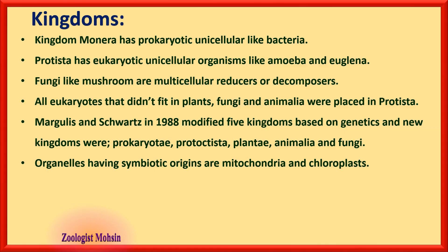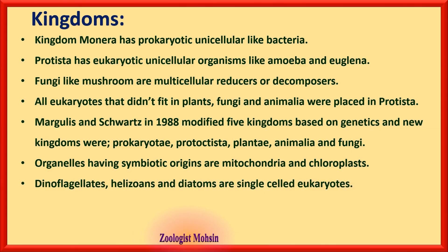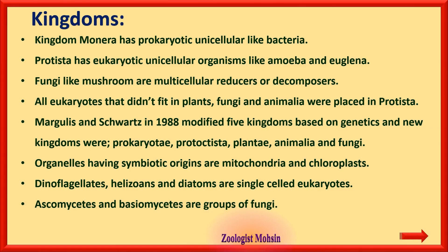Organelles with symbiotic origins include mitochondria and chloroplasts. It is thought that mitochondria and chloroplasts were once independent prokaryotes that became endosymbionts entering other prokaryotes, giving rise to eukaryotism. Dinoflagellates, heliozoans, and diatoms are single-celled eukaryotes. Ascomycetes and Basidiomycetes are groups of fungi.